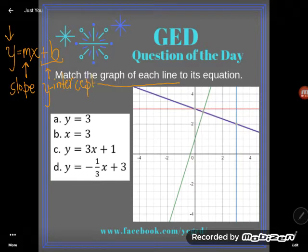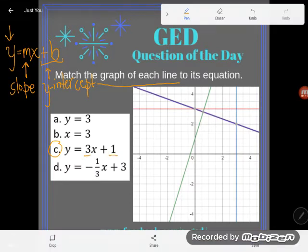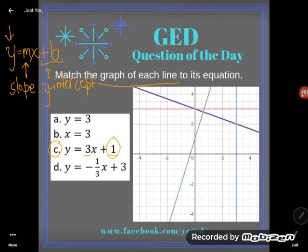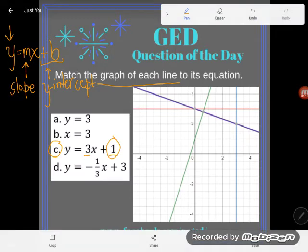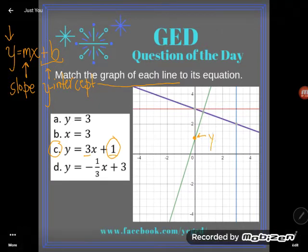So for example, let me look at c here. C has a slope of 3 and a y-intercept of 1. When you want to find that on a graph, you start with the y-intercept. So y-intercept means where my line crosses the y-axis. And you can see that this green line here crosses the y-axis between 0 and 1. That looks like a y-intercept of 1.